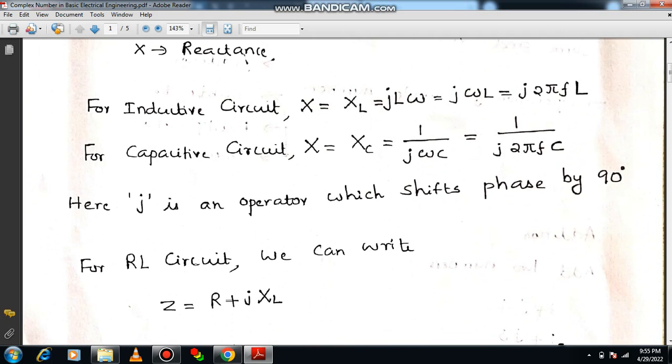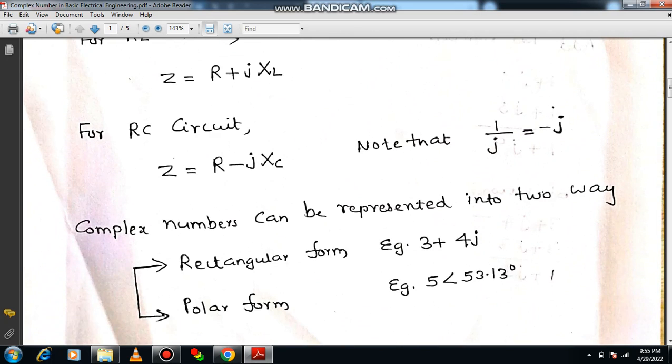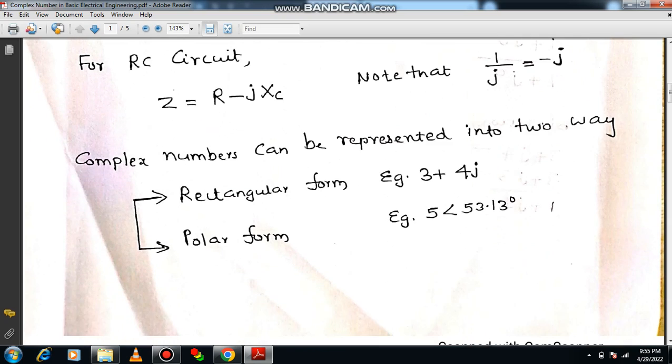Let us see the particular equation. If you talk about this particular equation, please concentrate here. X equals 1 by J omega C. So 1 by J means minus J. So I can write 1 by J equals minus J omega into C. So that is why it has come negative. So thereby we can write for RC circuit Z equals R minus J XC. This concept you should know when you are doing the analysis of AC parallel circuit.